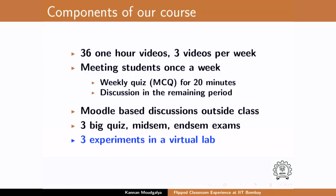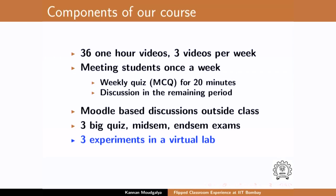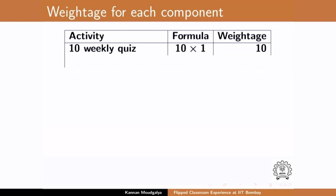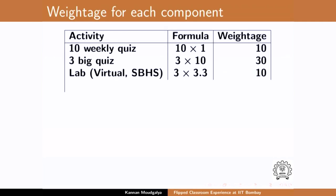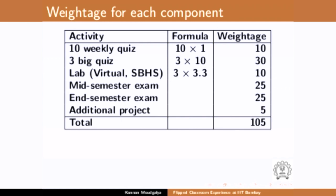I also had a virtual lab — I asked them to do three experiments. But at the end, some students came and complained they did not realize they would be doing so badly. So I gave an optional 5-mark project. The weightage was: 10 weekly quizzes worth 10 marks total, 3 big quizzes at 10 marks each totaling 30 marks, virtual lab 10 marks, mid-semester exam 25 marks, end-semester exam 25 marks, and the additional project 5 marks — totaling 115.